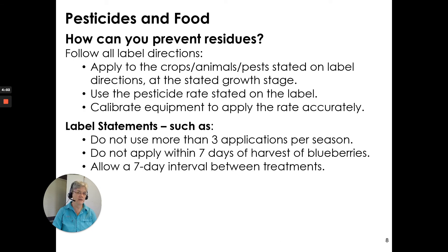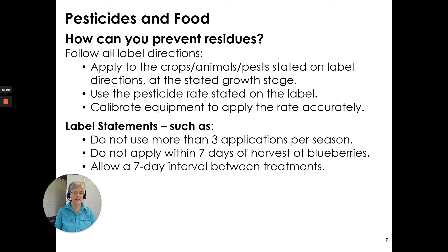How can you prevent residues? Follow all label directions. Apply to the crops, animals, and pests stated on the label at the stated growth stage. Use the pesticide rate stated on the label. Calibrate equipment to apply that rate accurately. Label statements such as 'Do not use more than three applications per season,' 'Do not apply within seven days of harvest for blueberries,' and 'Allow a seven-day interval between treatments' are all there to keep residues below the maximum residue limit.